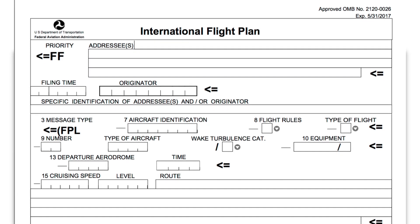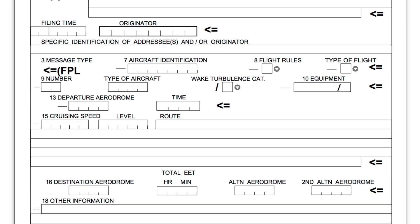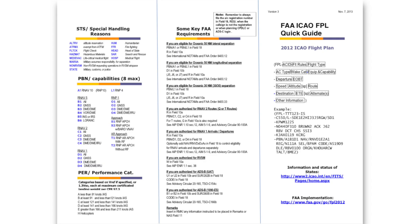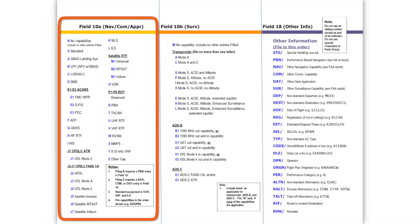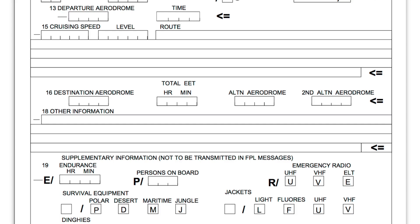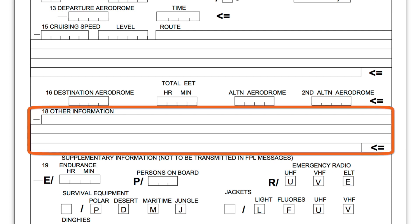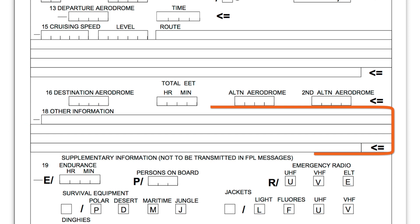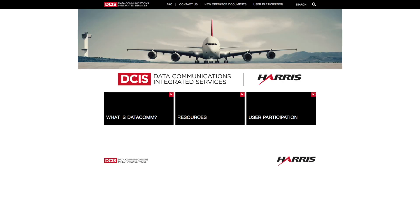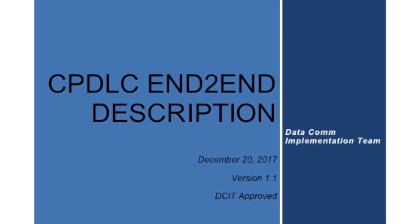Prior to using DCL, operators must indicate their datacom communications capabilities in field 10A of the ICAO flight plan form. These codes can be found on the FAA ICAO FPL quick guide. In addition, ATC will automatically provide the clearance using your preferred delivery method if you file the proper DAT code in field 18 of the flight plan.